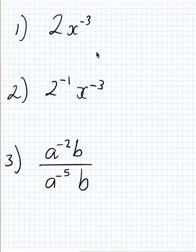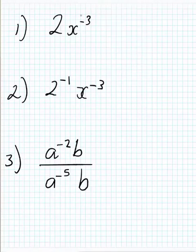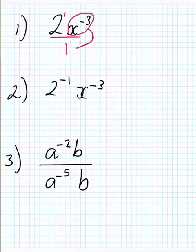Let's try a few examples. In example 1, we see a negative power on x. Be careful — the 2 does not have a negative power; it has a positive power of 1, so the 2 stays on top. The x to the power of negative 3 simply goes on the bottom and becomes positive, leaving us with 2 over x to the power of 3, or x cubed. Done.